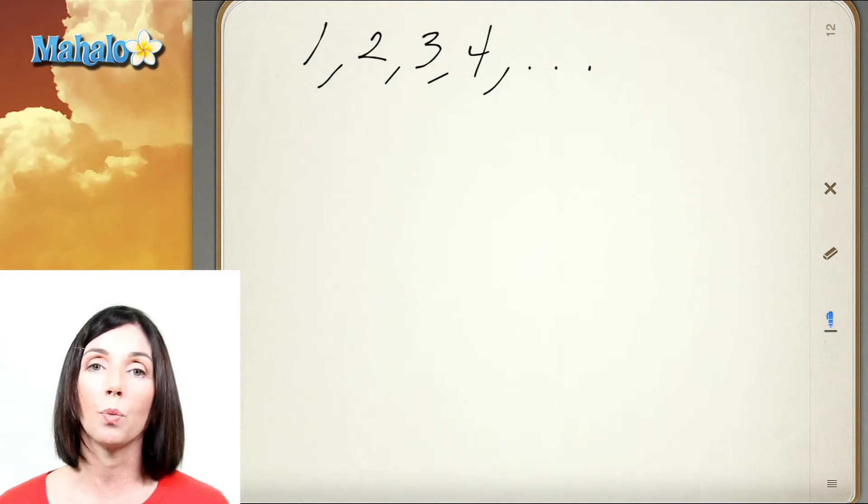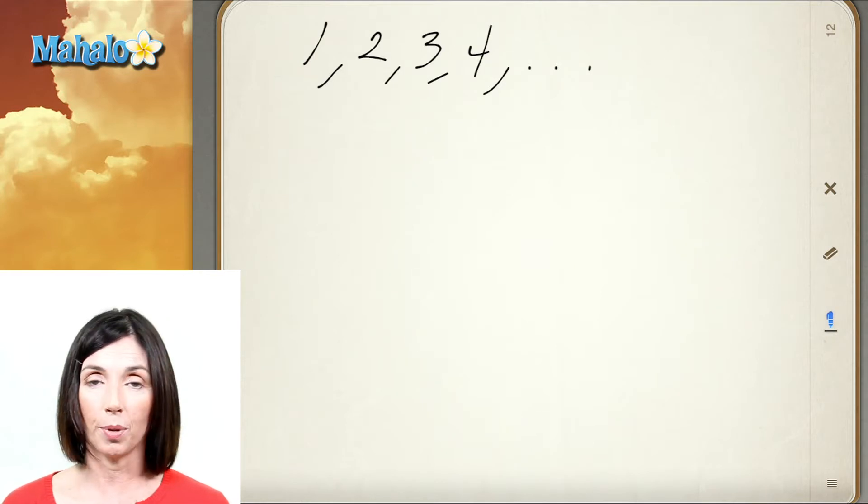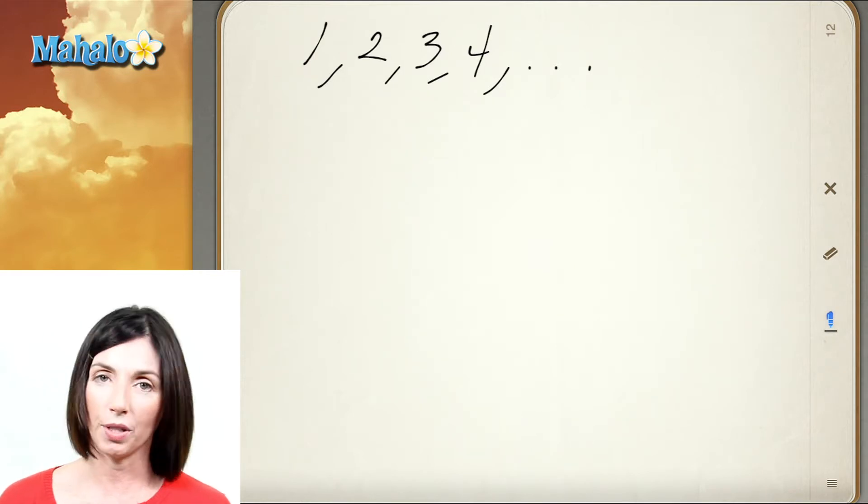A prime number is one that has only two factors, the number 1 and the number itself. And a composite number is any number that has more than two factors.